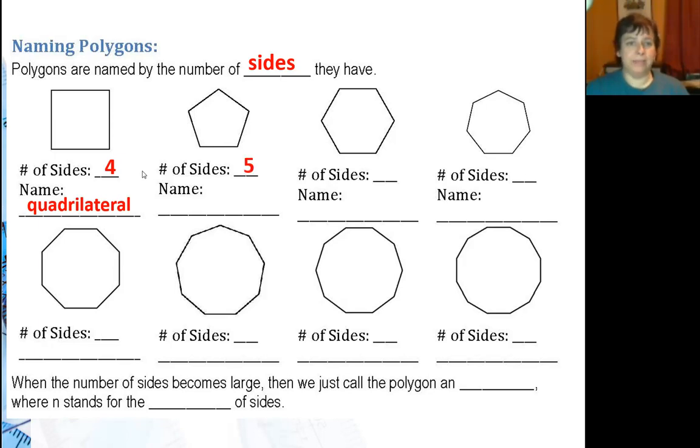This next one has five sides and it's actually named a pentagon. Penta is for the number five. The next one is six and that name is hexagon.